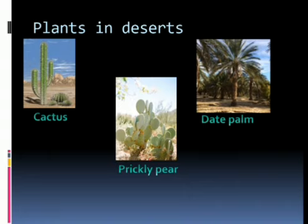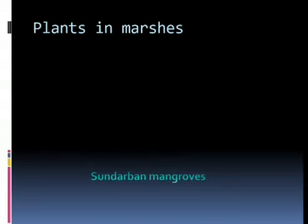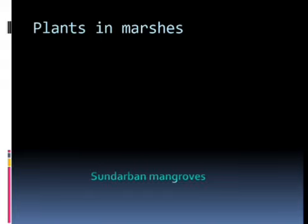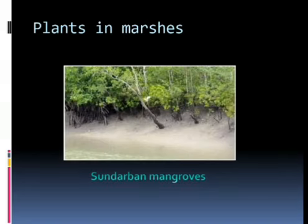Third, plants in marshes. As marshes have sticky clay soil and plenty of water, these areas are also called swamps. The roots of these plants come out of the water and soil to breathe, and therefore these are called breathing roots. Plants found in these areas are known as mangroves.